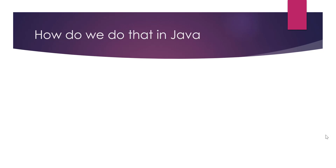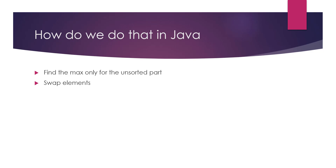So how do we implement this in Java? We repeat the same steps: find the maximum element — but only for the unsorted part — going from 0 up to the last element of the unsorted array. The second step is to swap the maximum value with the last element in the unsorted part. We use a for loop and repeat until no unsorted elements remain.